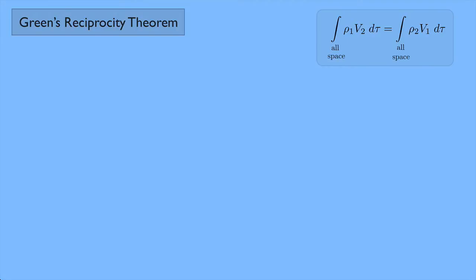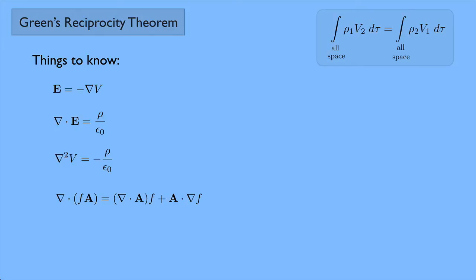Now, before we prove it, let's look at the things we need to know. First, we can write the electric field as the negative gradient of a potential — this is just the relationship between E and V. Next, we'll use the differential form of Gauss's law. It's also possible to do a proof using Poisson's equation, but I won't use that here. Then we have a vector identity where F is a scalar function and A is a vector function. Finally, we have the divergence theorem, which relates a volume integral to a surface integral.